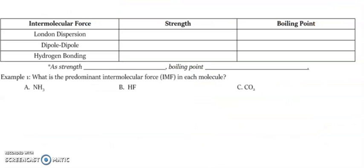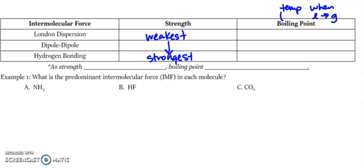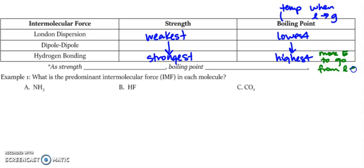To summarize and overview: London dispersion is the weakest and hydrogen bonding is the strongest, which puts dipole-dipole in the middle. So from weakest to strongest: London dispersion, dipole-dipole, hydrogen bonding. Boiling point is the temperature when your liquid turns into a gas. The higher that temperature, the more energy you have to put in. So hydrogen bonding has the highest boiling point because it takes the most energy — it's the strongest. London dispersion has the lowest. As strength increases, boiling point increases.